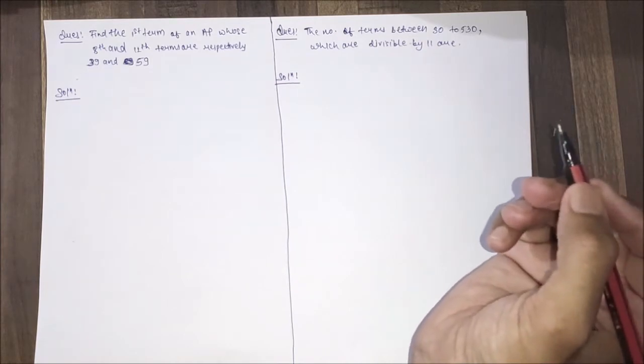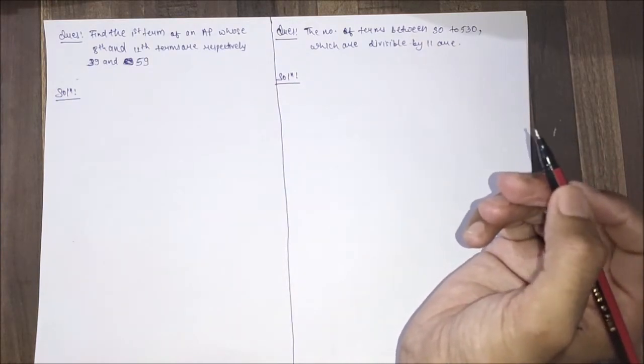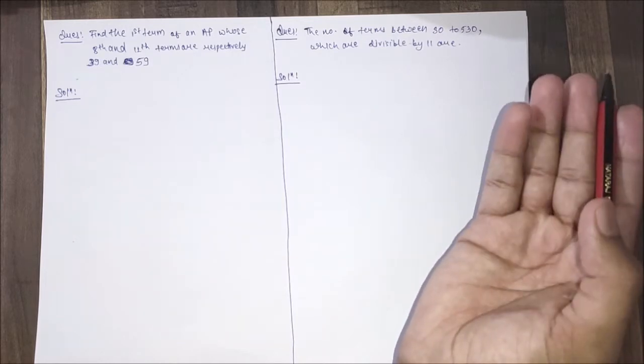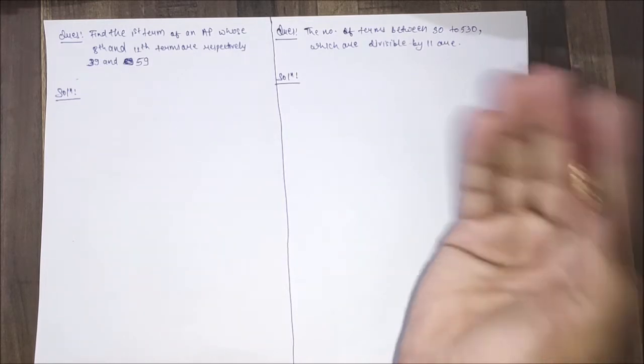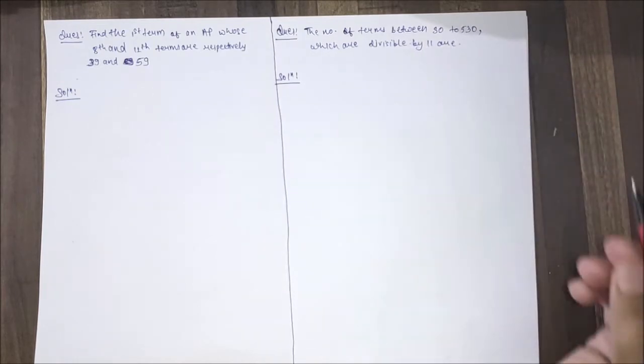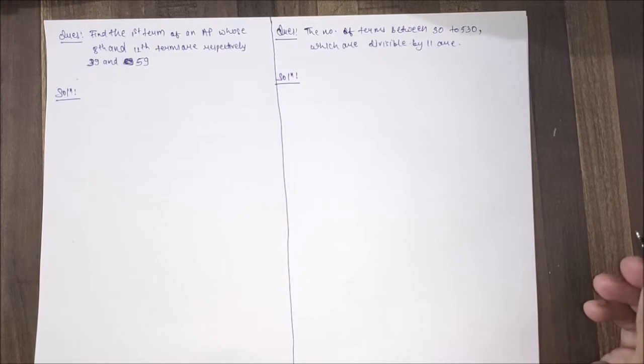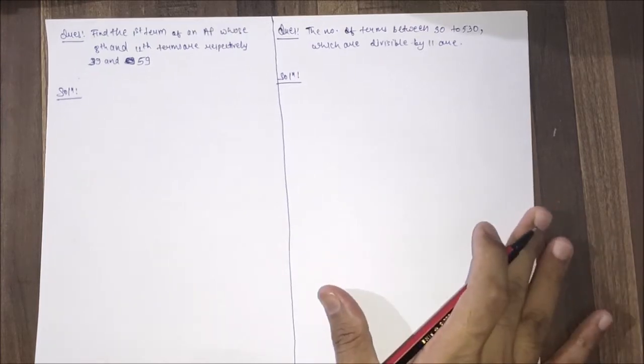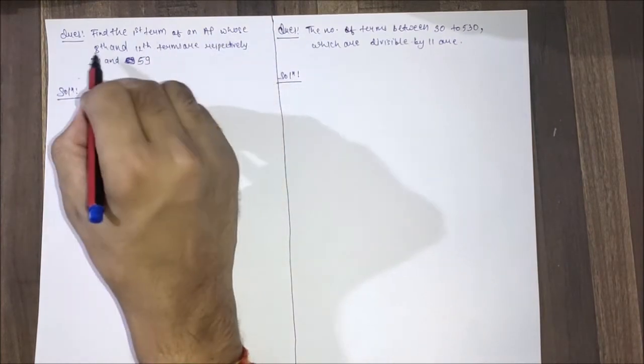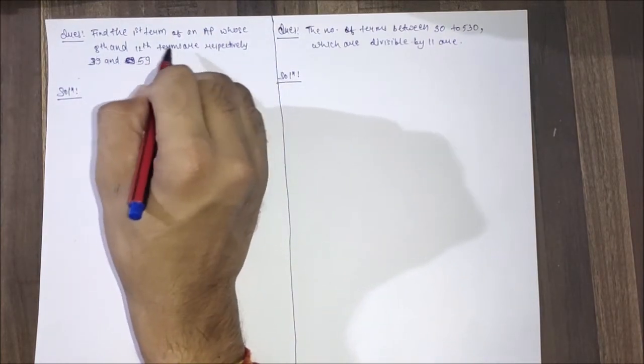Welcome back all. In this series on arithmetic progression, we have discussed formulas on finding the nth term and sum of an AP, and also discussed some of the properties. Now let's solve some questions on them. Question number one: find the first term of an AP whose 8th and 12th terms are respectively 39 and 59.